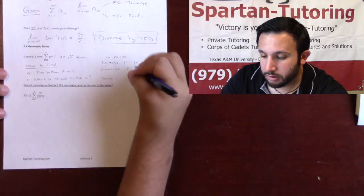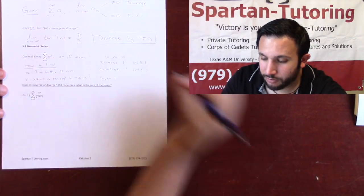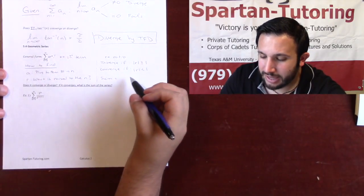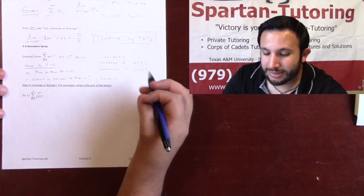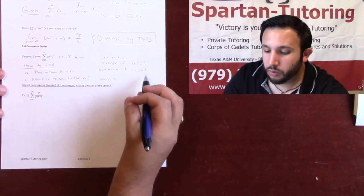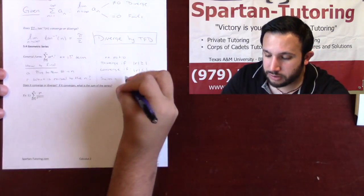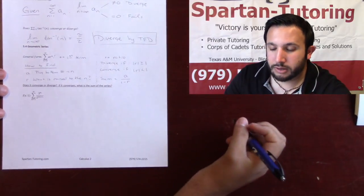However, it will converge if the absolute value of r is less than 1. And you know what's really cool about geometric series is that whenever it converges, you can actually calculate the infinite sum of that series. When the absolute value of r is less than 1, the entire sum of your series is given by a over 1 minus r.